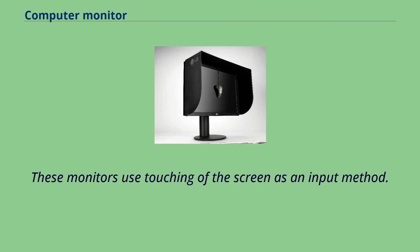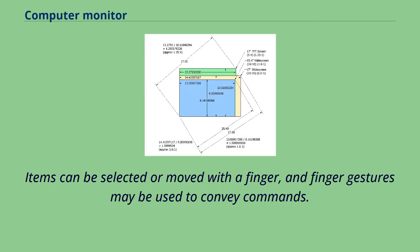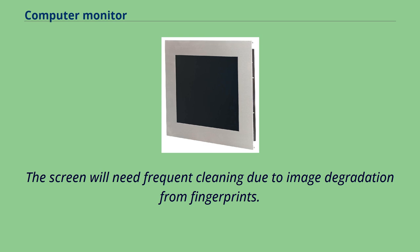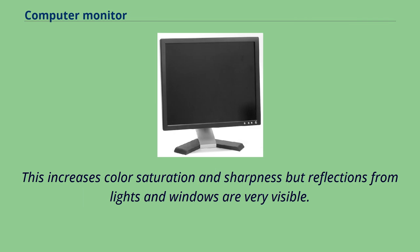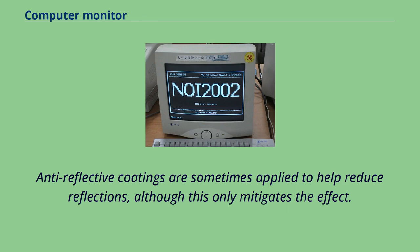Some monitors use touching of the screen as an input method. Items can be selected or moved with a finger, and finger gestures may be used to convey commands. The screen will need frequent cleaning due to image degradation from fingerprints. Some displays, especially newer LCD monitors, replace the traditional anti-glare matte finish with a glossy one. This increases color saturation and sharpness but reflections from lights and windows are very visible. Anti-reflective coatings are sometimes applied to help reduce reflections, although this only mitigates the effect.